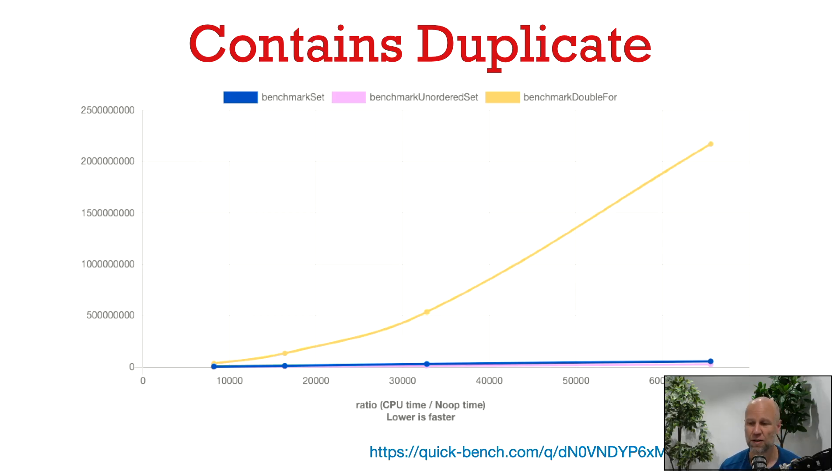So you can see that choosing the right data structure can make a huge difference. As the input size becomes large, there's really a large gap between the double for loop algorithm and these other algorithms using hash tables or balanced binary search trees.